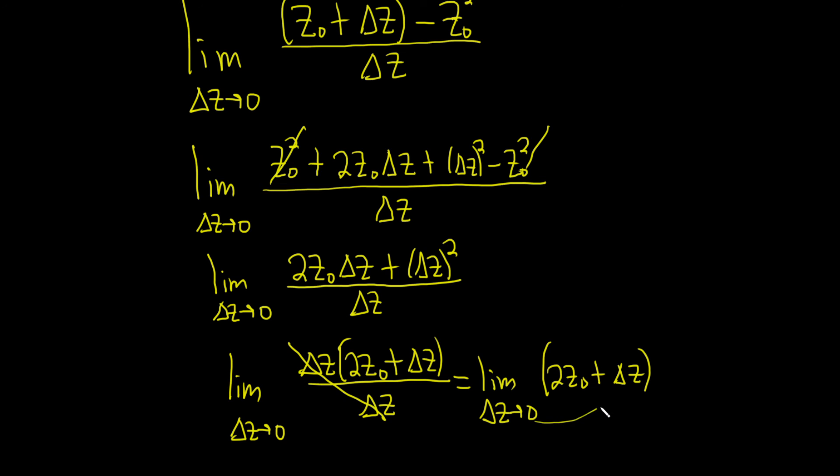And now you just take this and plug it in. So this is equal to 2z0 plus 0. Notice I stopped writing the limit sign when we actually plug in the number. So you just get 2 times z0, and that would be the final answer.